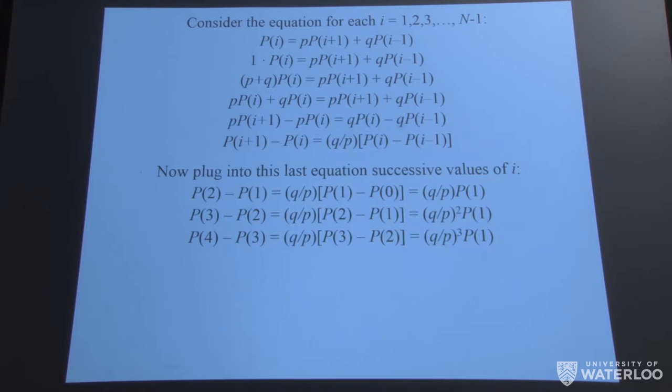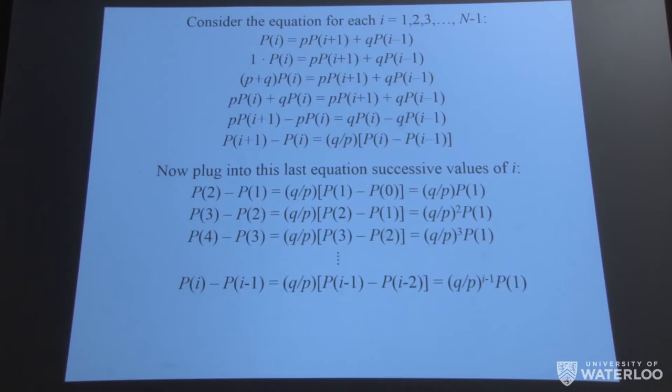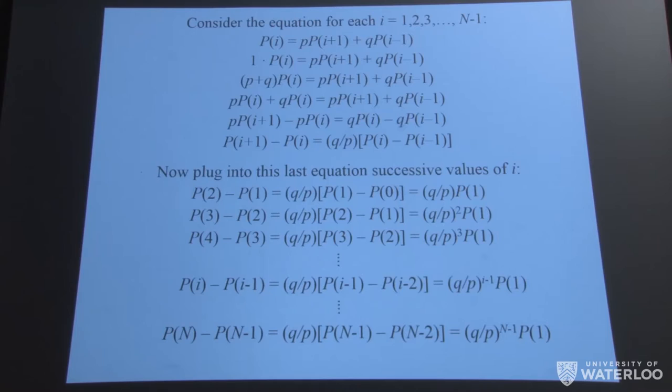So in general, inductively, if you use induction, you can show that P i minus P i minus 1 is nothing more than this ratio Q over P raised to the power i minus 1 times this unknown yet. We still don't know what P of 1 is, but just write it as P of 1. And we can do this process over until the last value, which is for i equals n minus 1. We end up with this particular equation. So we have these sets of equations at our disposal now. So what can we do with this?